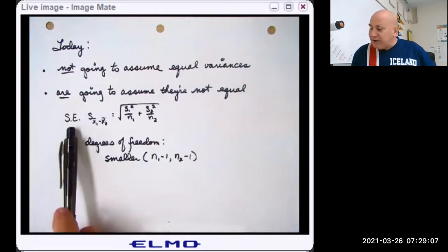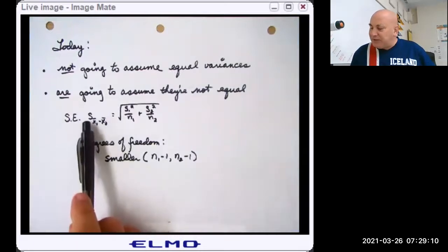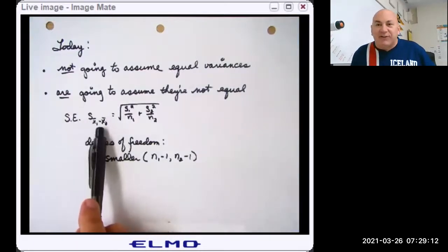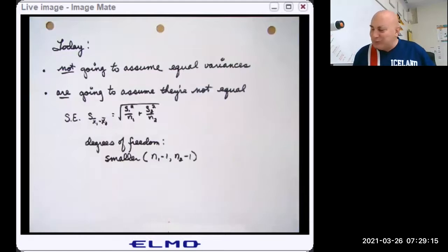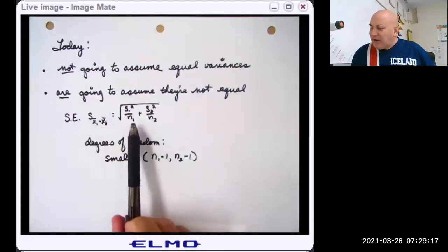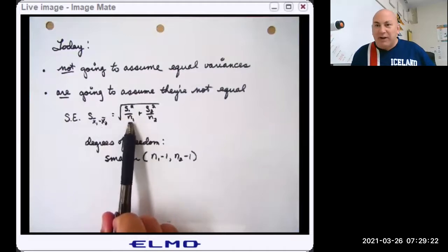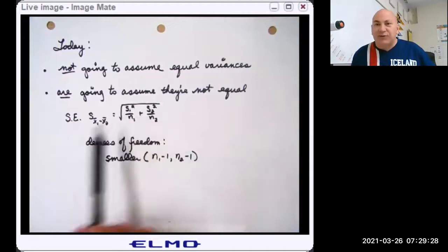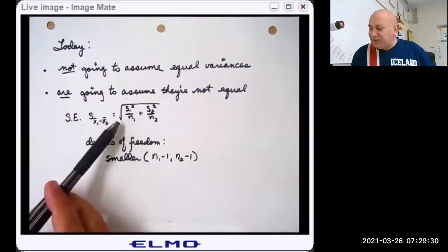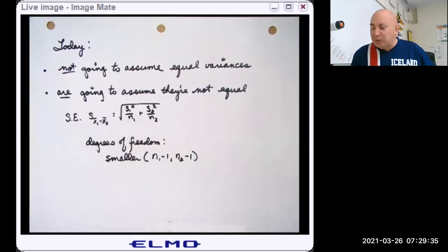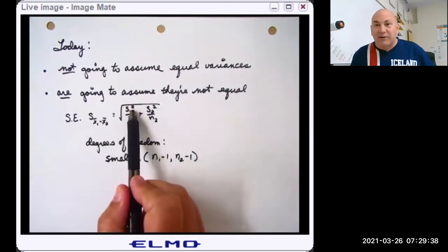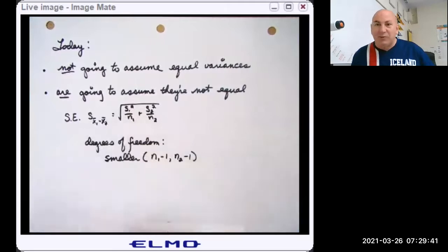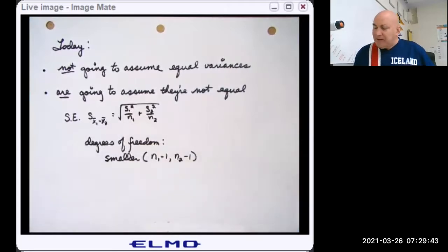Our standard error — think of it as the standard deviation of the differences of the two x-bars — is computed as: S1 squared over N1, plus S2 squared over N2, all under a square root. That's just a two-sample analog to S over root N: you have the square root of S squared, which is S, over the square root of N.